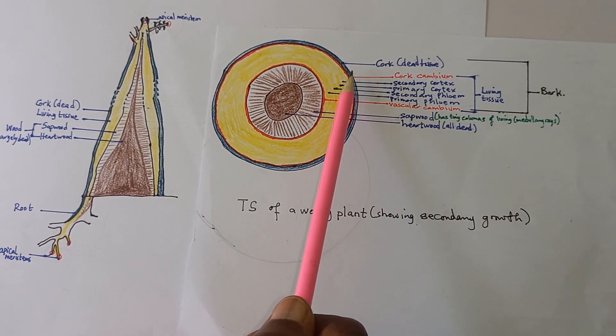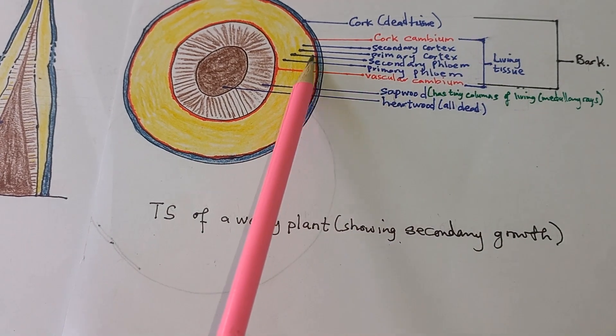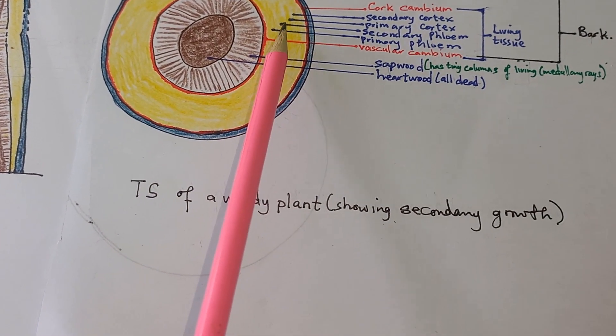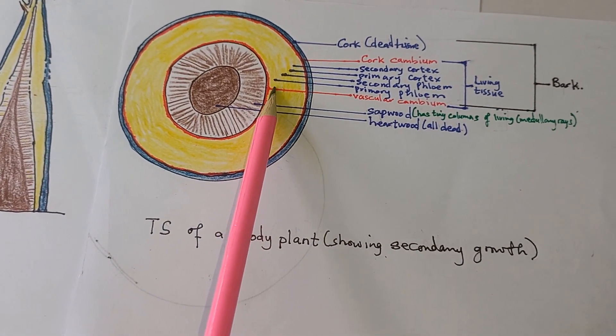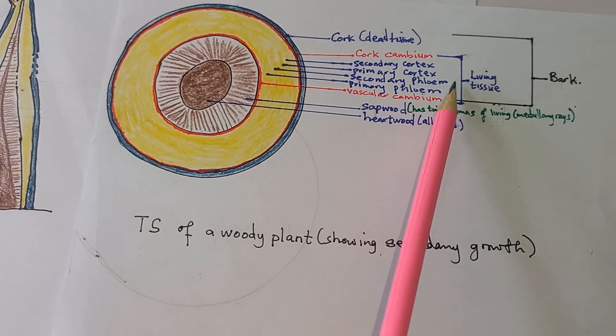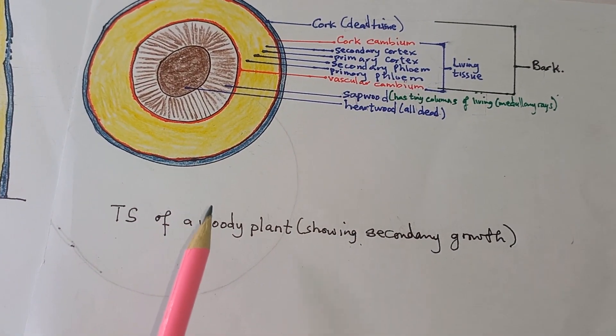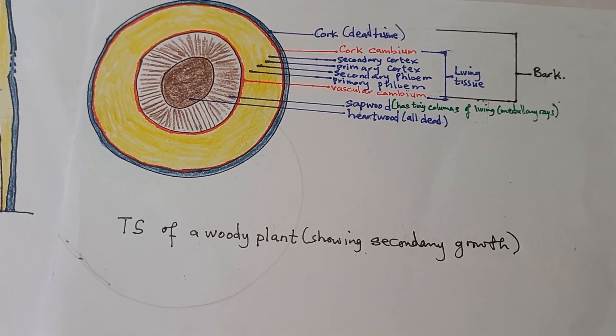Here is the composition of the living tissue. It includes cork cambium, secondary cortex, primary cortex, secondary phloem, primary phloem, and vascular cambium. This arrangement is all about secondary growth that we will talk about in our next lesson.